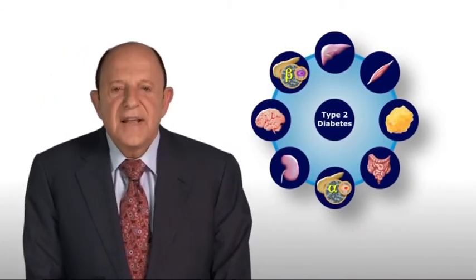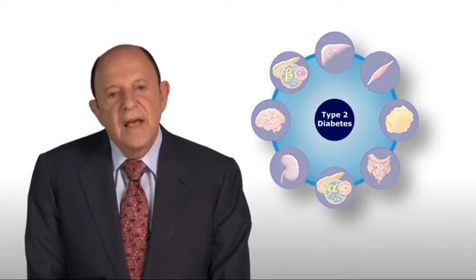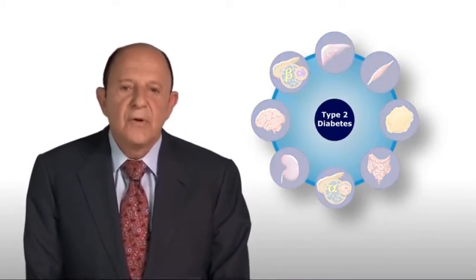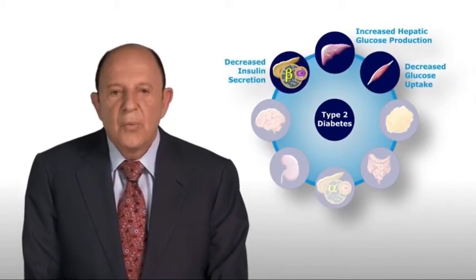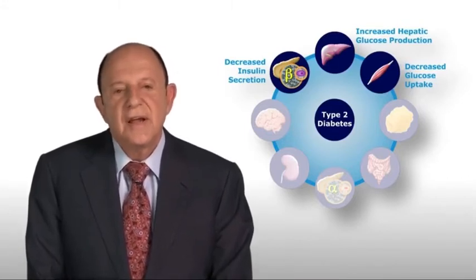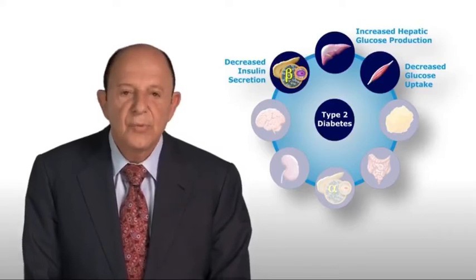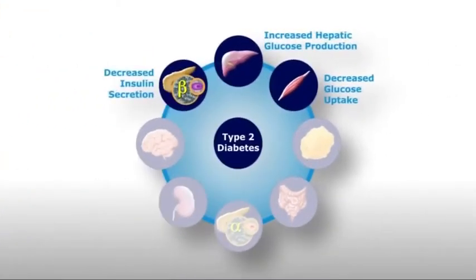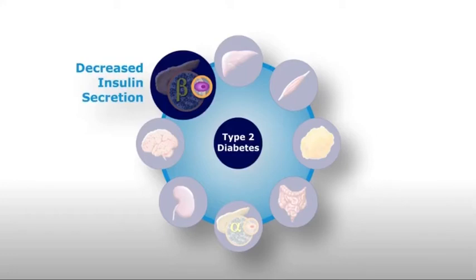When I gave the Lilly Lecture in 1987 at the American Diabetes Association annual meeting, I talked about the triumvirate, which consisted of defects in the liver, in the muscle, and in the beta cell. We know that people who are destined to develop type 2 diabetes inherit a set of genes that make their tissues, particularly the liver and the muscle, very resistant to insulin. Early in the natural history of the disease, the beta cell is healthy and can secrete sufficient amounts of insulin to offset the insulin resistance in liver and muscle.